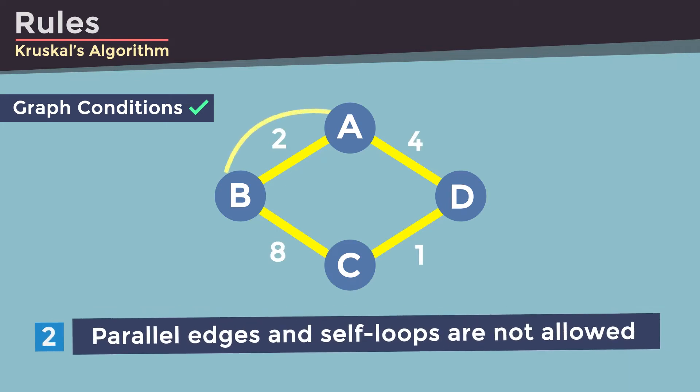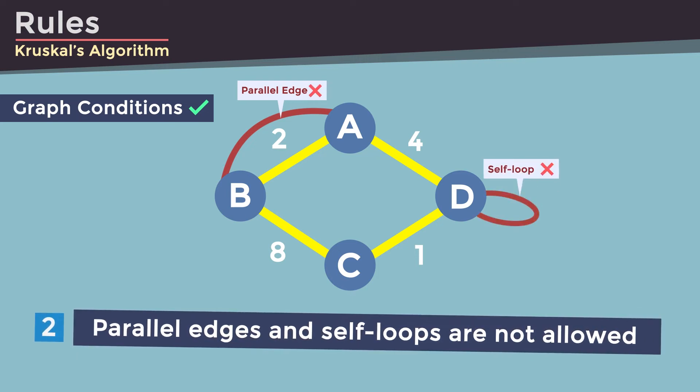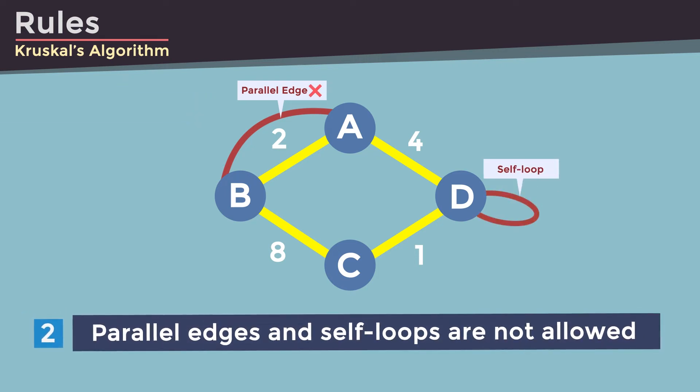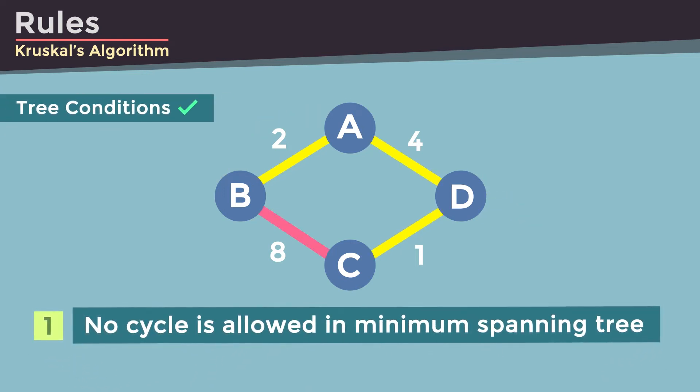And the next condition is that parallel edges or self-loops are not allowed. Additionally, we must discuss minimum spanning tree conditions. The first one is that no cycle is allowed in minimum spanning tree.